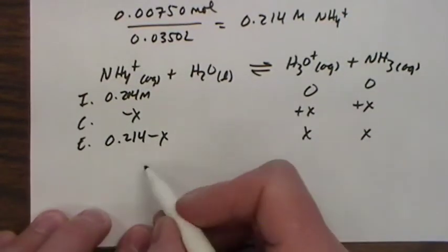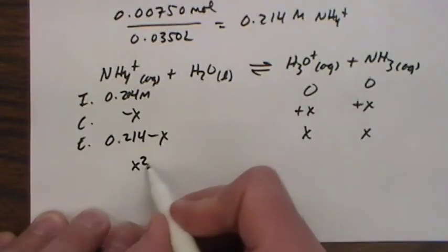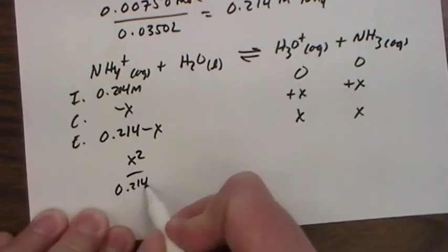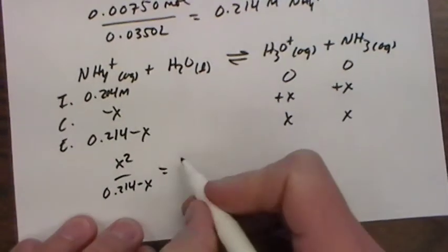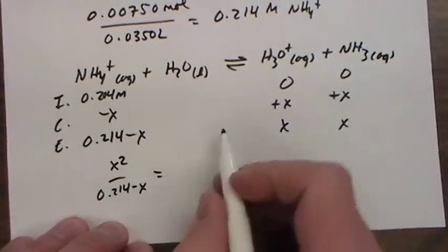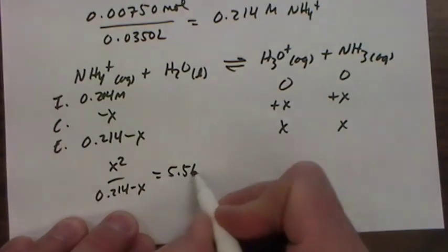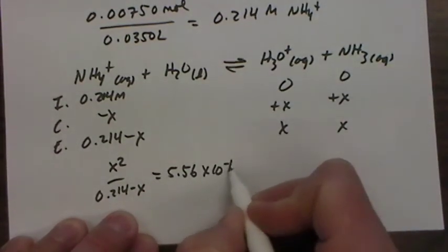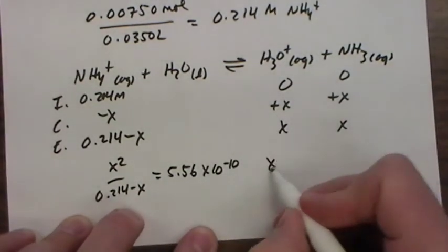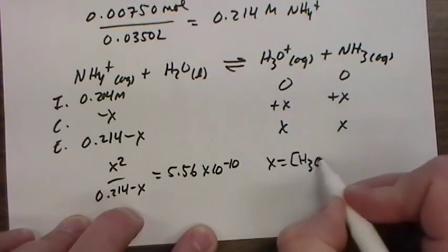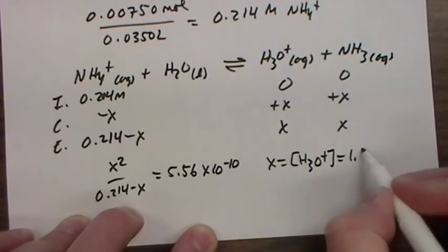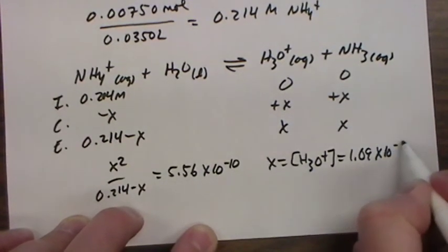And when we get done, it's X squared. And it's the same K, this is KA, so it's the same KA as before for the ammonium ion. X, which is the concentration of H3O+ in this case, is 1.09 times 10 to the minus 5 molar.